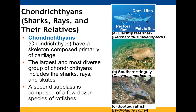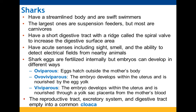Chondrichthyes are where your sharks and rays are found. Sharks have a streamlined body and most are carnivores with a very short digestive tract. Their eggs are fertilized internally and can develop in various ways: oviparous, where eggs are laid externally, or viviparous, where the embryo develops internally.